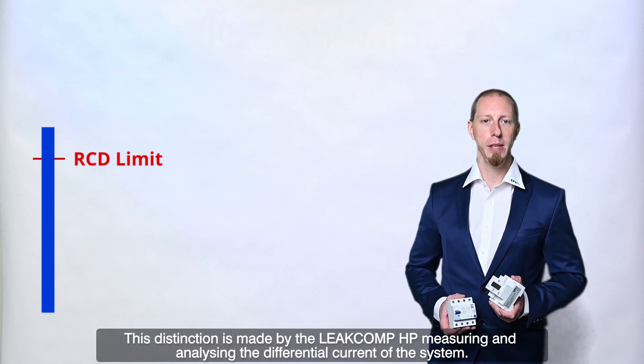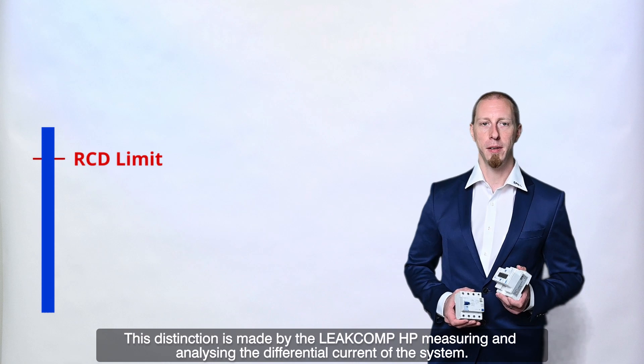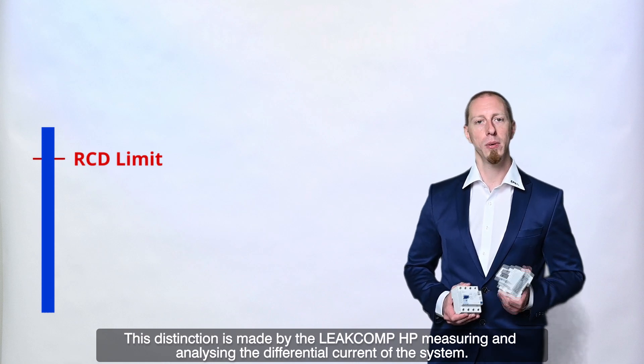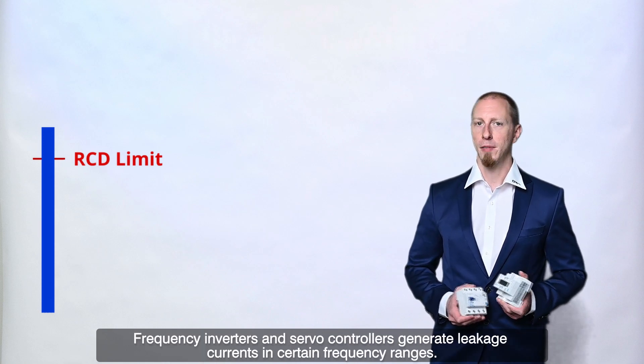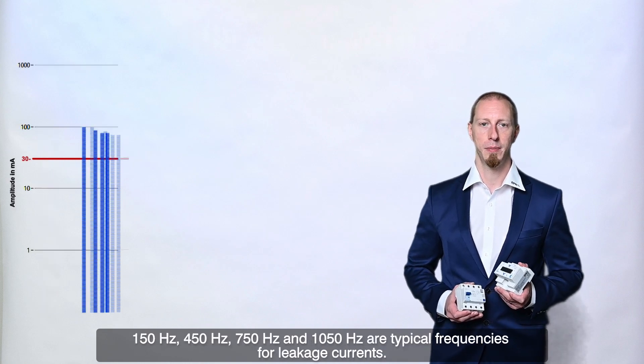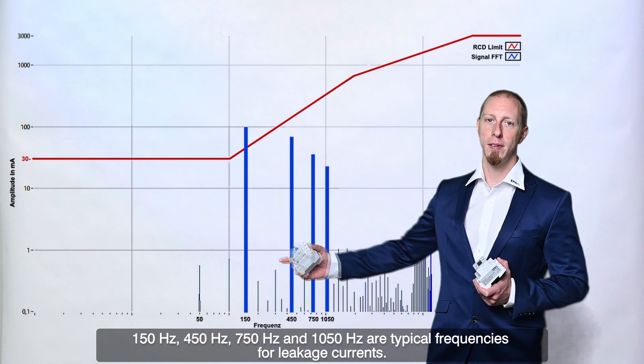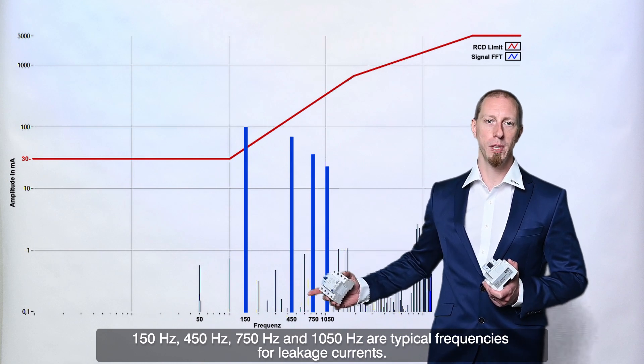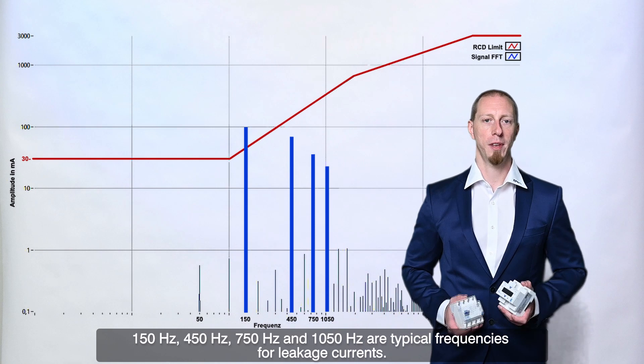This distinction is made by the Leacomp HP measuring and analyzing the differential current of the system. Frequency inverters and servo controllers generate leakage currents in certain frequency ranges. 150 Hz, 450 Hz, 750 Hz and 1050 Hz are typical frequencies for leakage currents.